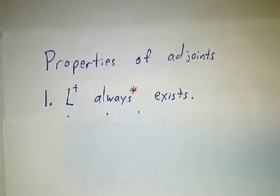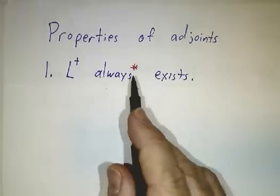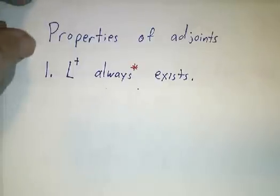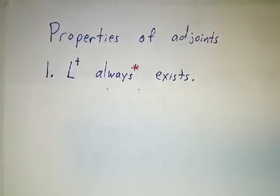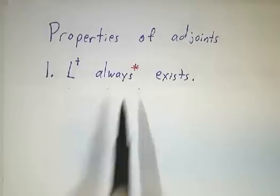So what? Well let's figure out some properties of adjoints. The first is that they exist. I say always—if you've got infinite dimensional vector spaces, there are some subtle issues about domains, but we're not going to worry about them. In finite dimensions, they always exist. In infinite dimensions, they exist if you make your definitions correctly.